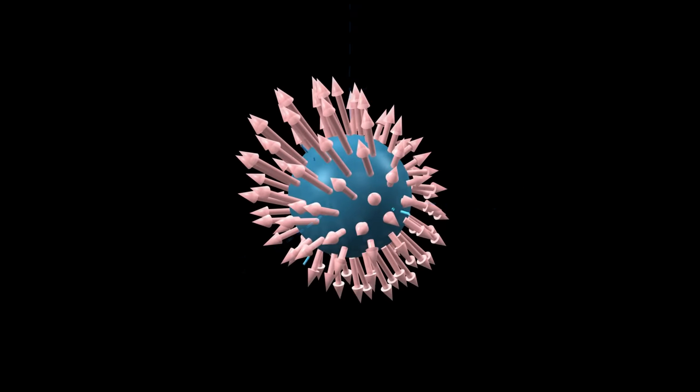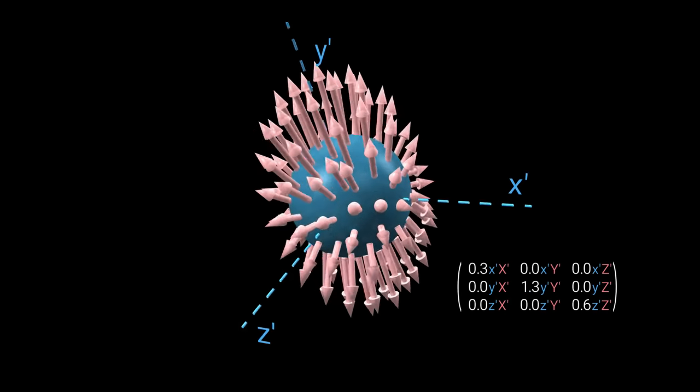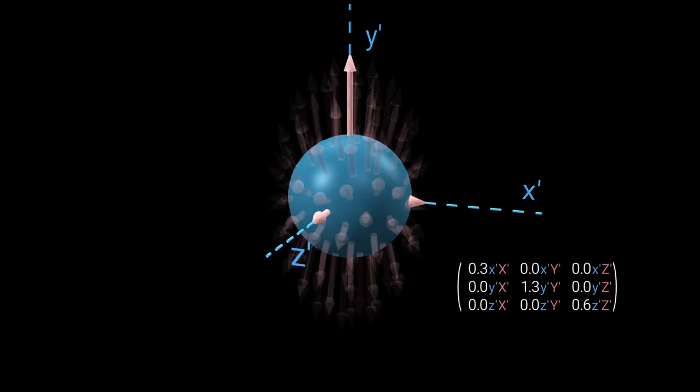It can be shown we can always find a coordinate system that is aligned with the bulges. In this coordinate system, the matrix is diagonal. The three stress forces here are called principal stresses.